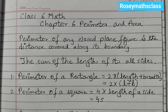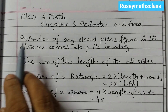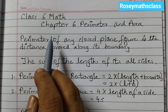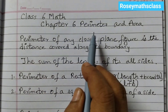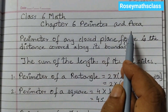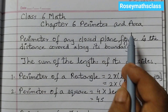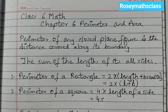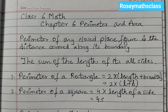Hello students, welcome back to Rosy Maths class. Today we shall discuss all the formulas of Class 6 Math Chapter 6, Perimeter and Area, from the new textbook Ganit Prakash that was released last year in 2024.